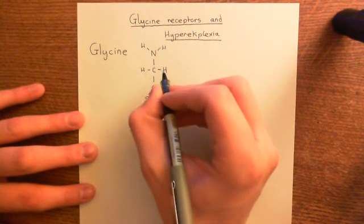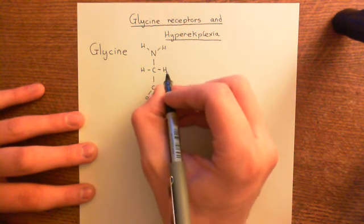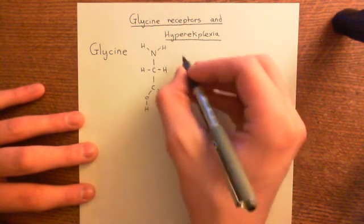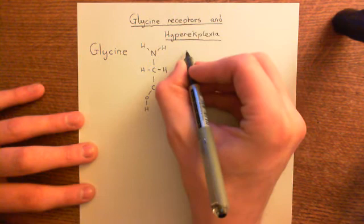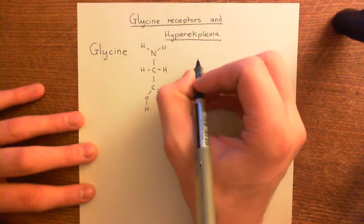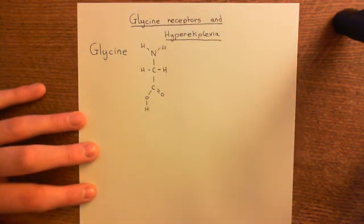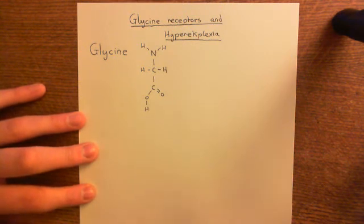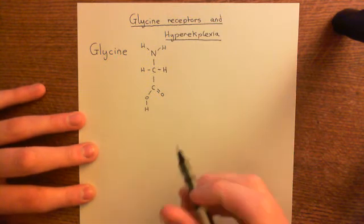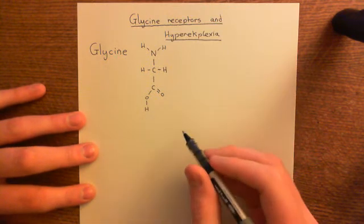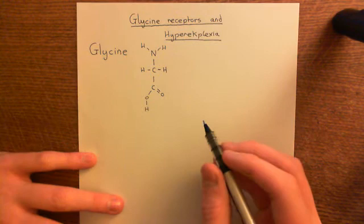Glycine is used in proteins, but it's also used as an inhibitory neurotransmitter in the spinal cord and also in the brainstem. So let's have a little reminder of the structure of the spinal cord, and we'll see the role of glycine as an inhibitory neurotransmitter within the spinal cord.